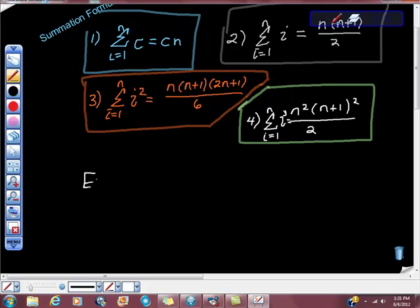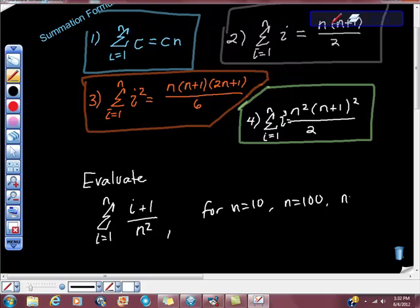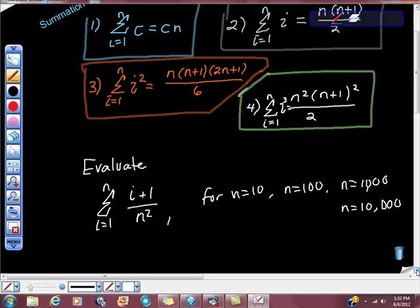Let's try to evaluate this sum. Let's evaluate the sum of I plus 1 all over N squared. And let's do that for N equals 10, N equals 100, N equals 1,000, N equals 10,000. Now if we tried to do this by hand, we know what we'd be doing. We're doing, in this case, we'd be doing 1 plus 2 plus 3 plus 4 plus 5 all the way up to 10. And if we did N is 10,000, we'd be doing N is equal to 1 plus 2 plus 3 plus all the way out until we got to 9,999 plus 10,000. So I think we'd be a little bit busy.